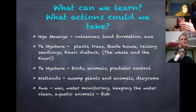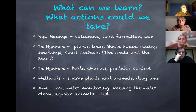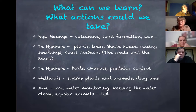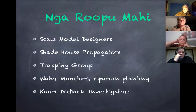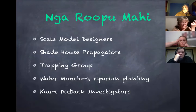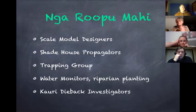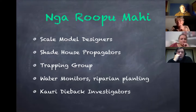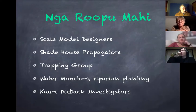We looked at the science curriculum and pulled out the nature of science: understanding about science, investigating in science, communicating in science, and participating and contributing. This was a local curriculum — an ongoing thing, not a one-off unit. We did it for about two years. The kids then identified things they wanted to learn about: the maunga and volcanoes, the ngāhere, birds and animals, predator control, kauri dieback, the wetlands, and the awa. Kids divided themselves into groups: some wanted to make a scale model of the rohe as suggested by Matua Dick, others became propagators in the shade house, a trapping group, water monitors with the Whitebait Connection, and a group investigating kauri dieback.